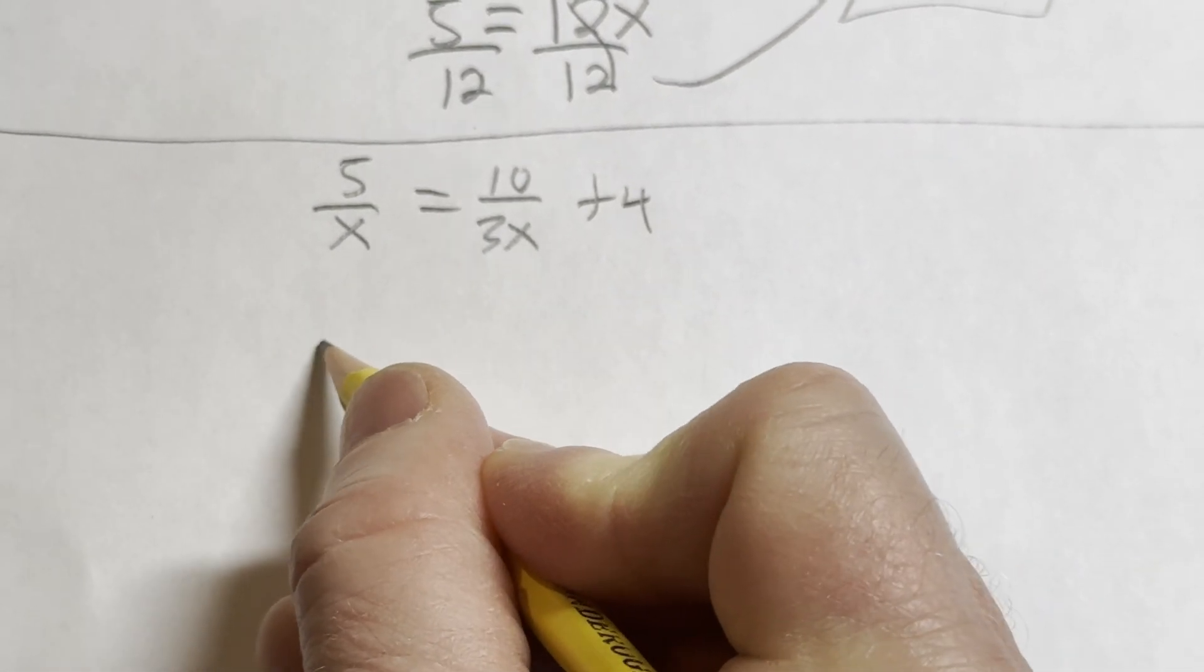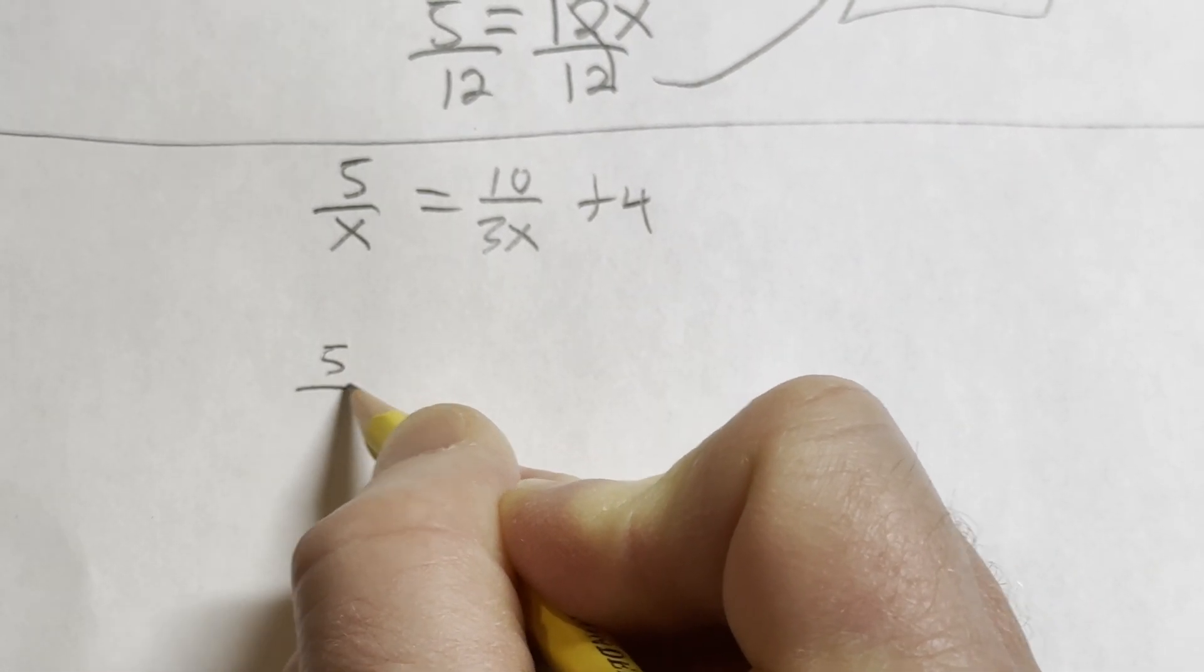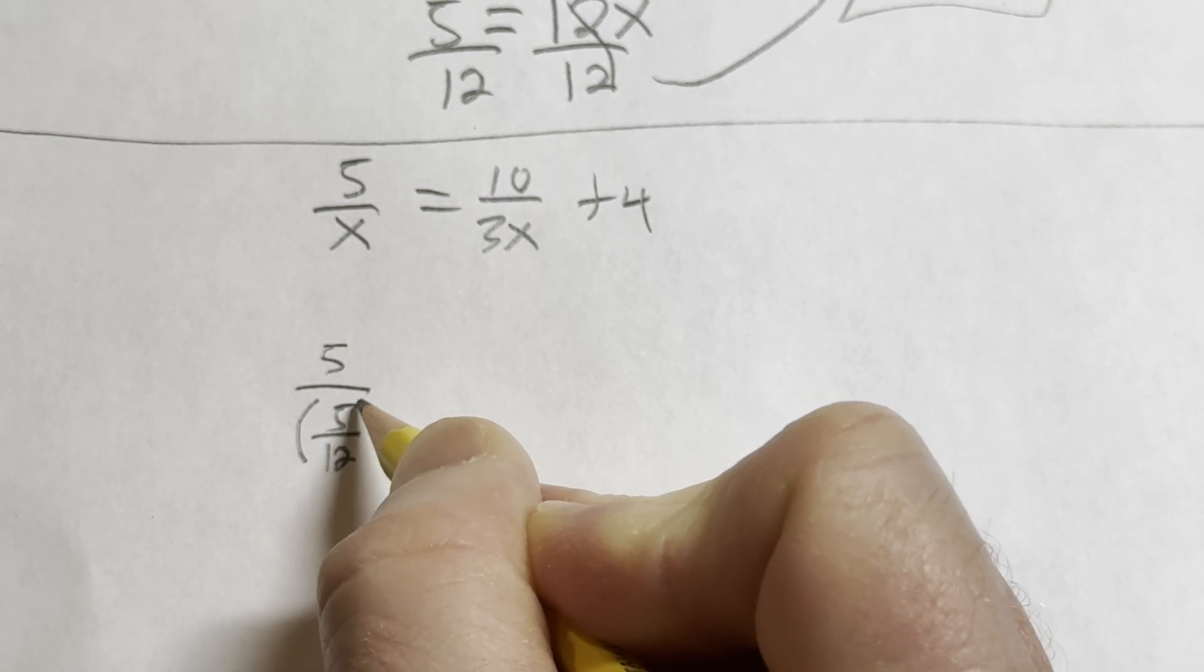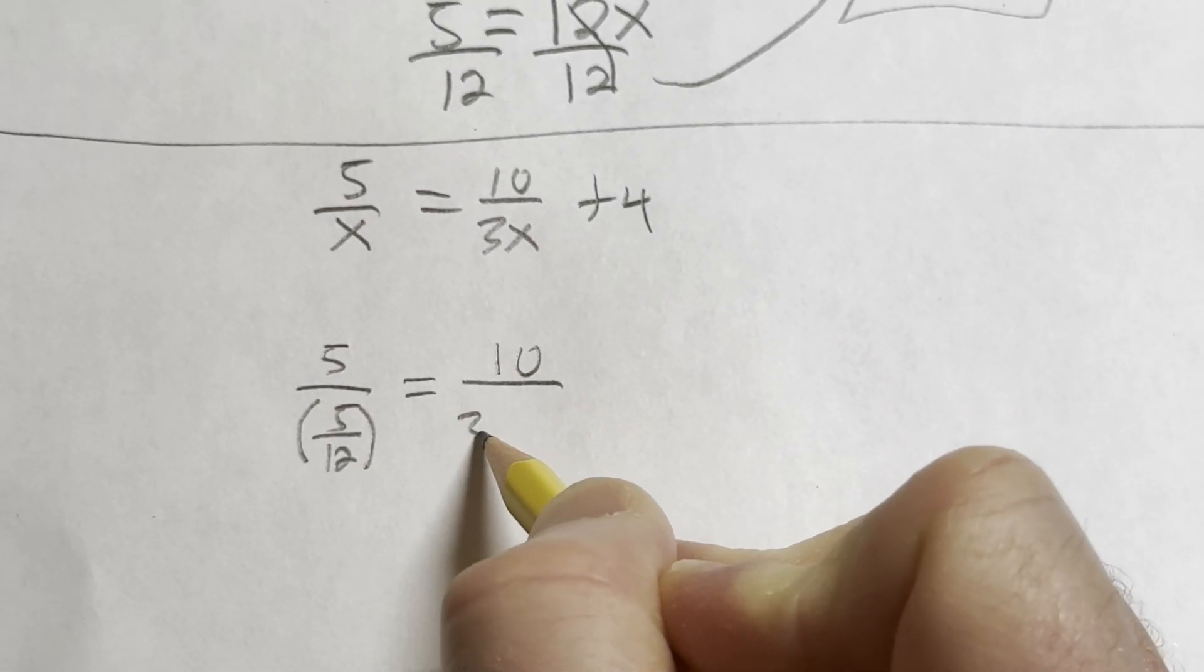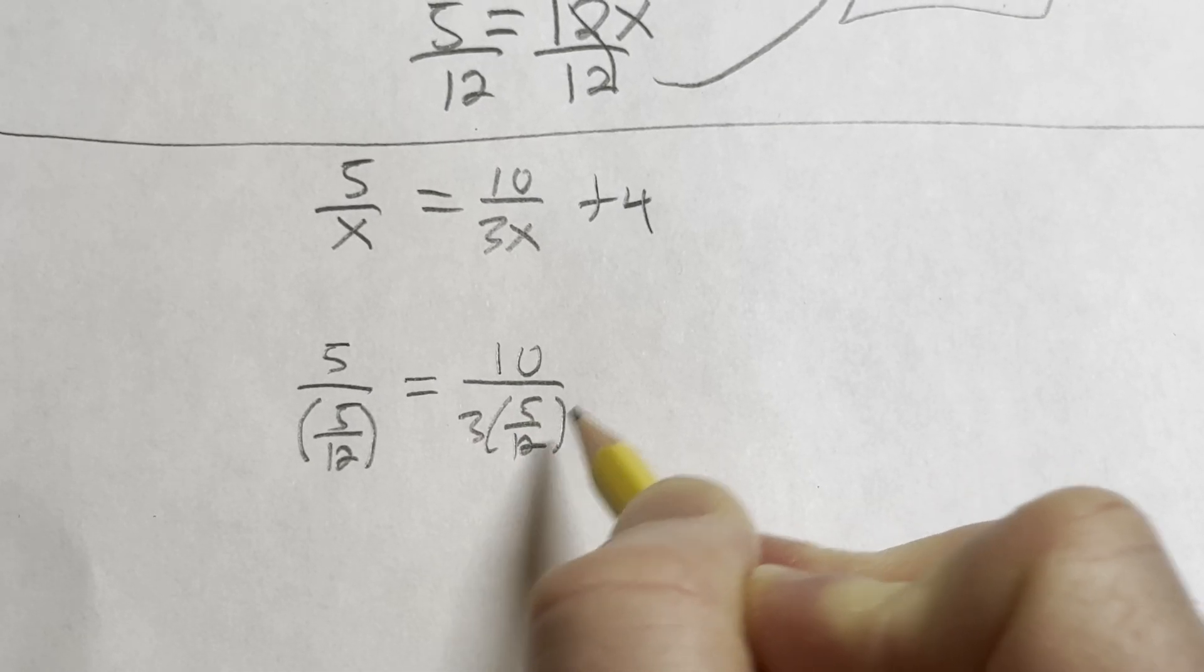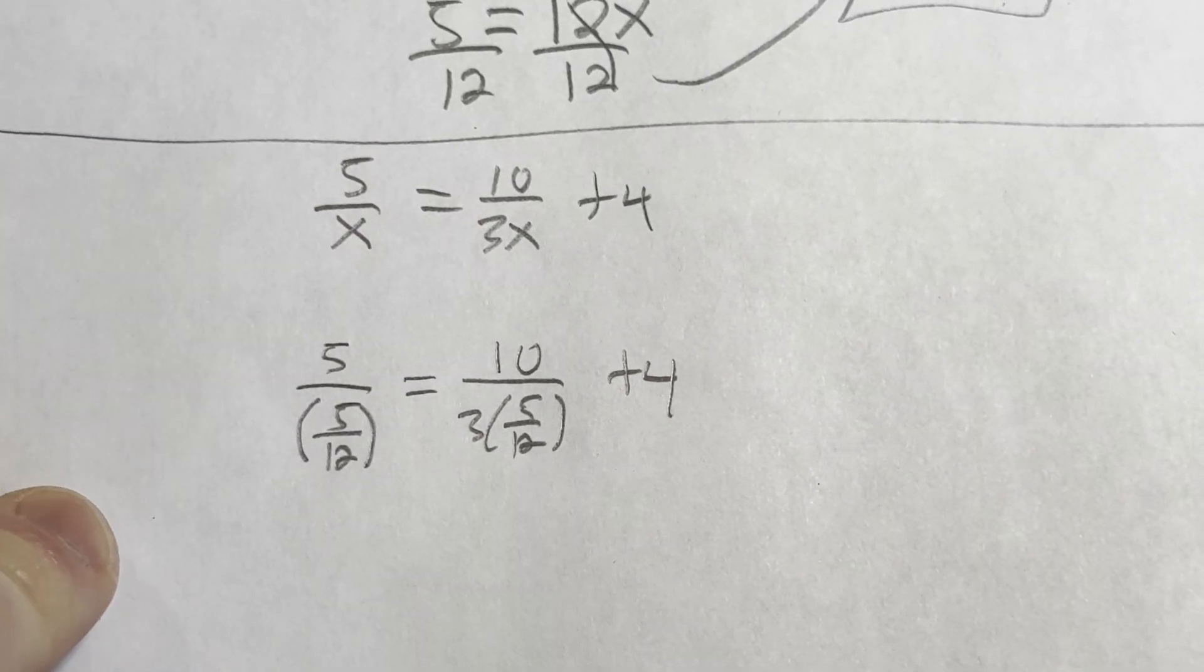So we're going to take this and plug it back in here. So let's be careful here. So it's 5 over 5 over 12, right? That's our x equals 10 over 3 times 5 over 12 plus 4.